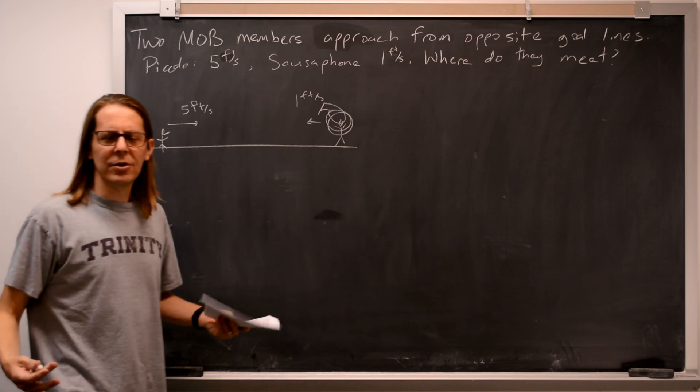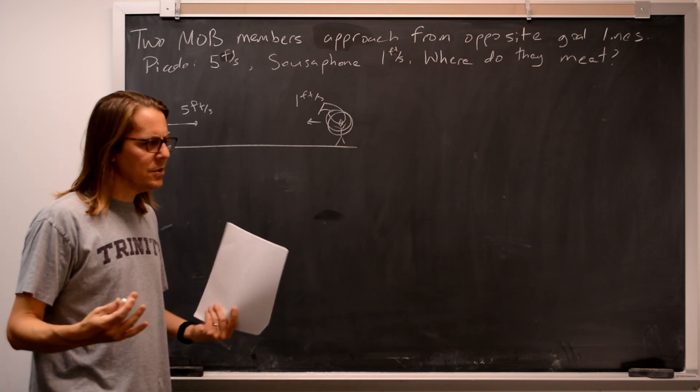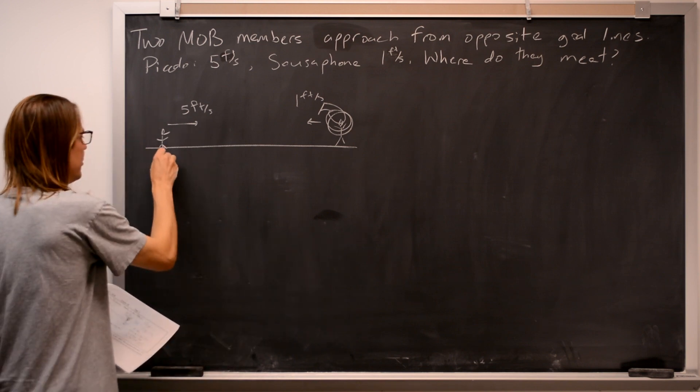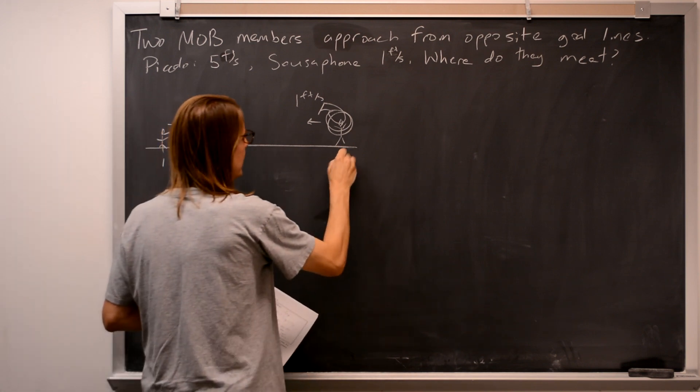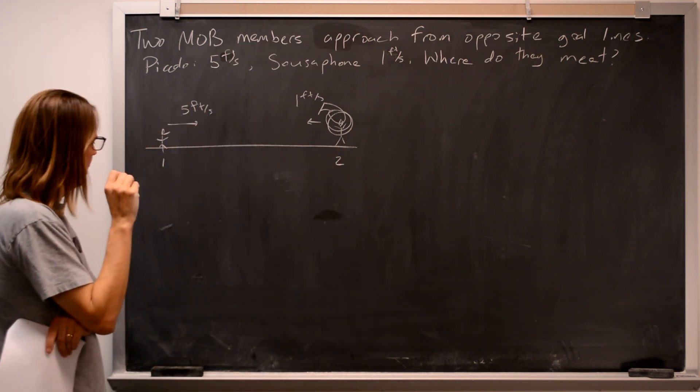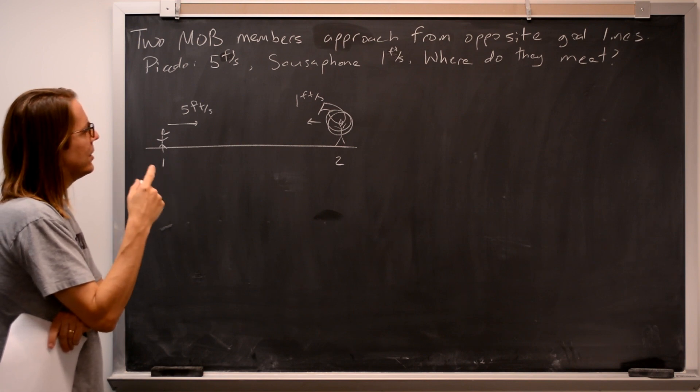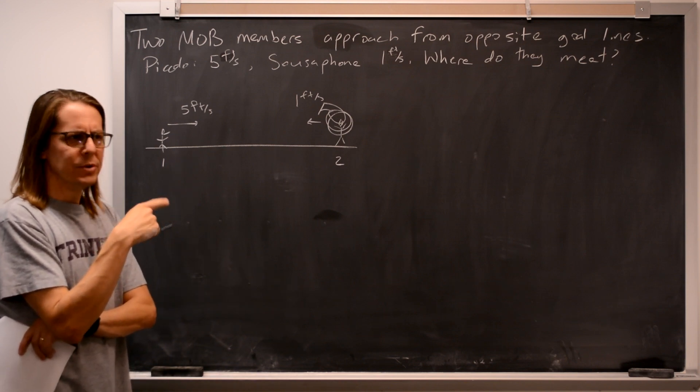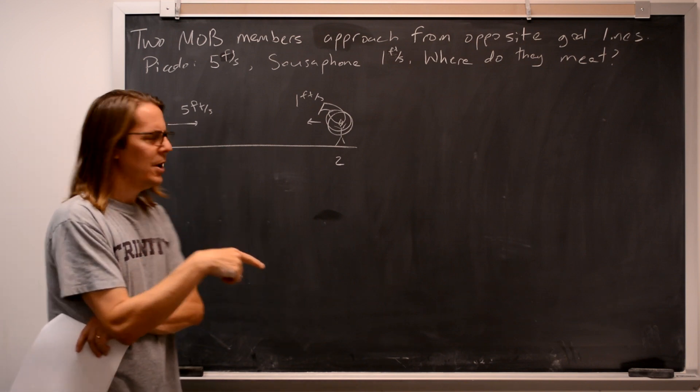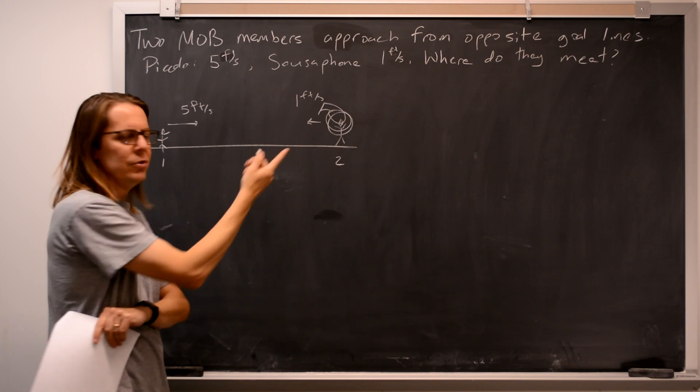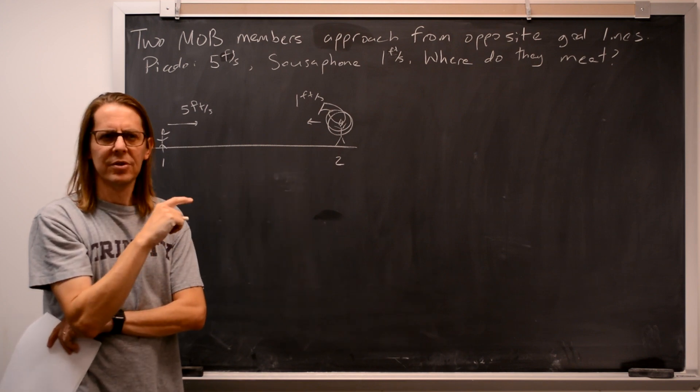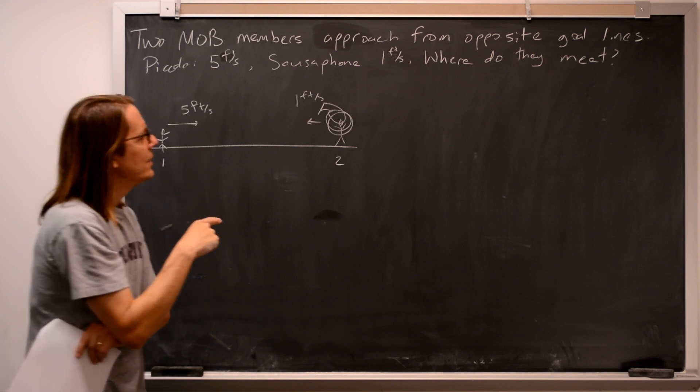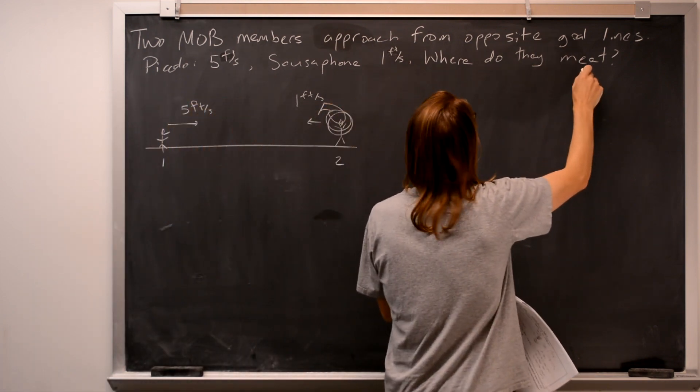And I think to get started, you can think about what equations you're probably going to need. We're probably going to use d equals vt, how far they go. So let's call this person the piccolo 1 and the sousaphone 2. And you can think, well, where do they meet? We've got to know where they are. But in d equals vt, we don't know d and we don't know t. And we have two velocities, but then we have two d equals vts. So it seems like there's more to know about this problem. And the key is here.